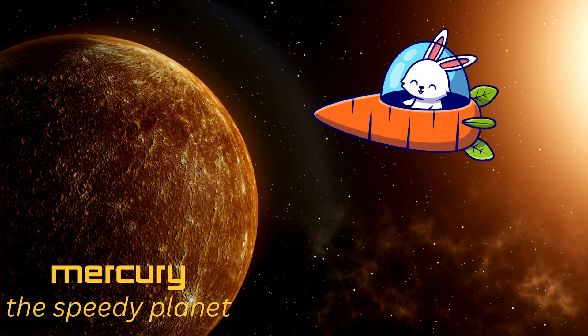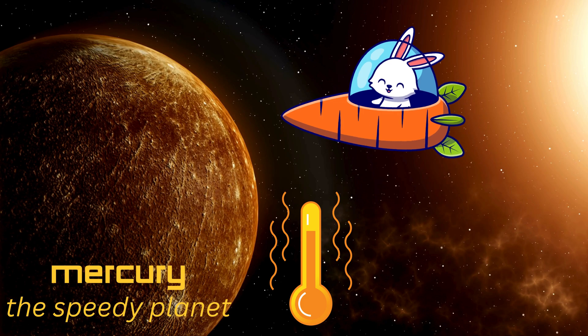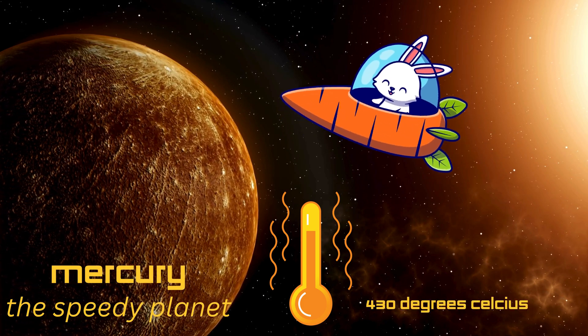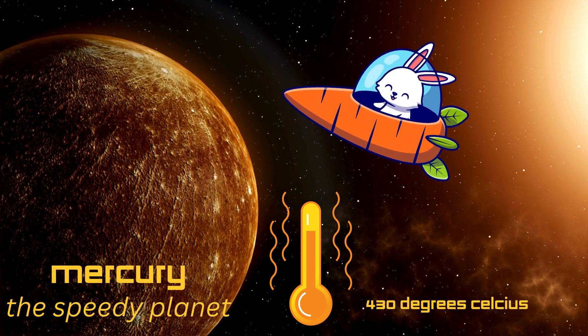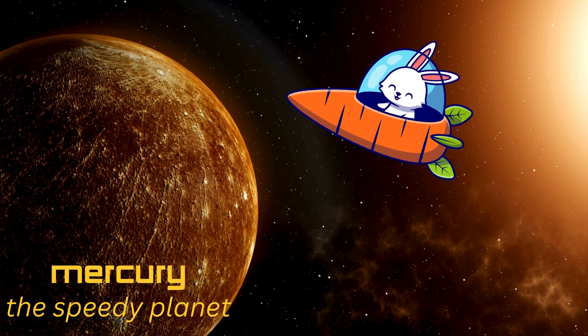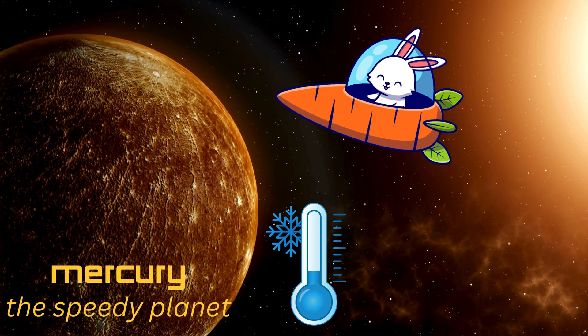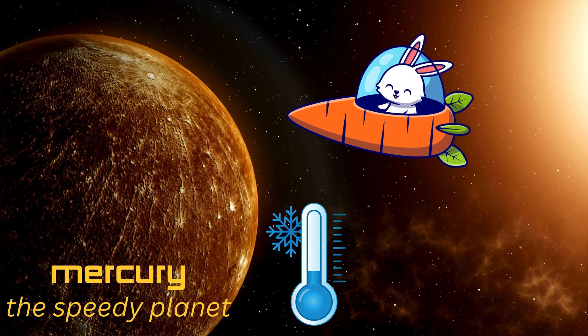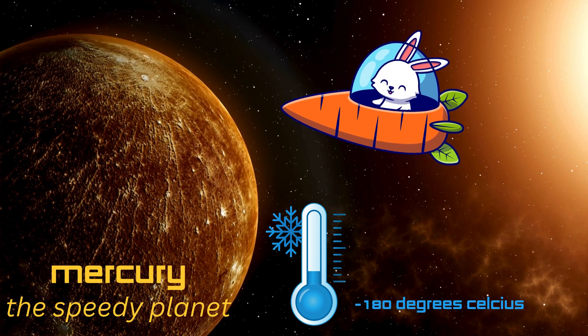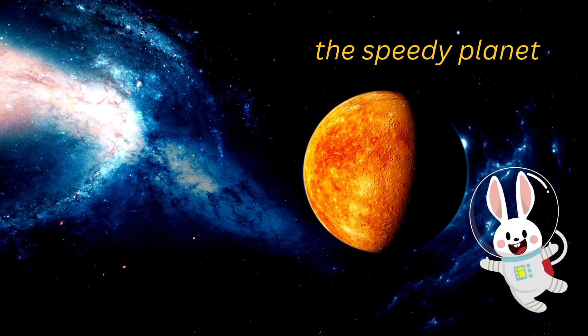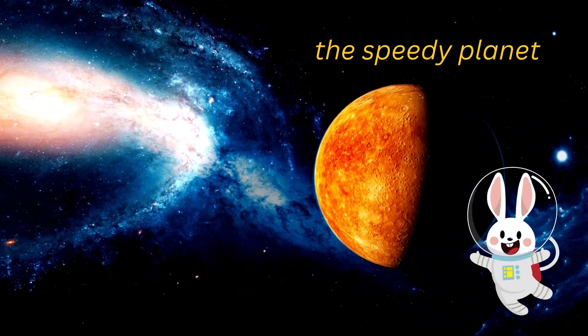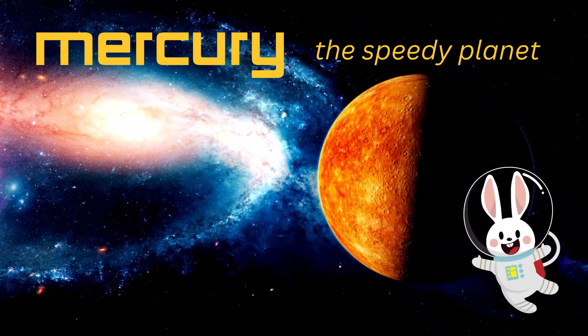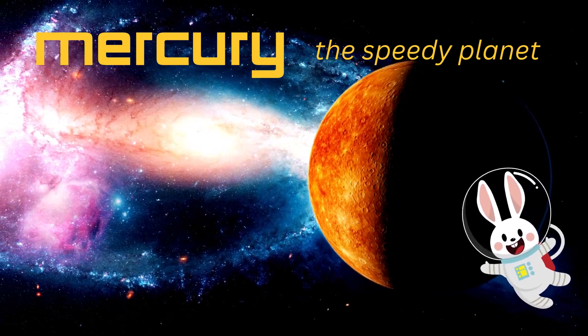Because it's so close, temperatures on Mercury can reach 800 degrees Fahrenheit, 430 degrees Celsius during the day. But at night, it gets freezing cold as low as minus 290 degrees Fahrenheit, minus 180 degrees Celsius. It doesn't have much of an atmosphere to keep the heat in, so it's a planet of extremes. Fast and fierce, that's Mercury.